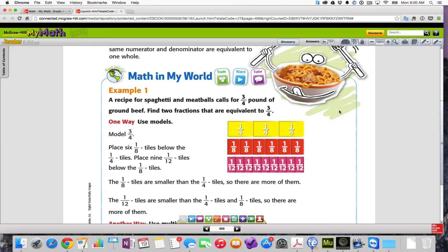So, our first example. It says, A recipe for spaghetti and meatballs calls for three-quarters pounds of ground beef. Find two fractions that are equivalent to three-fourths. Use models. So, here on the thing, they have our three-fourths on that top row that you can see. And then on our second row, they have used one-eighth tiles.